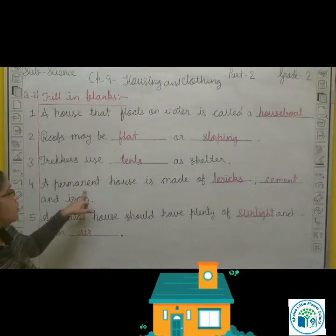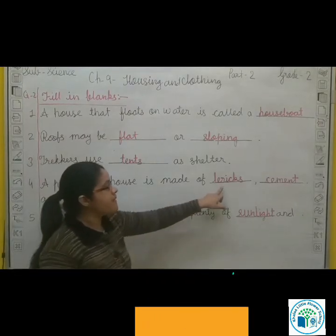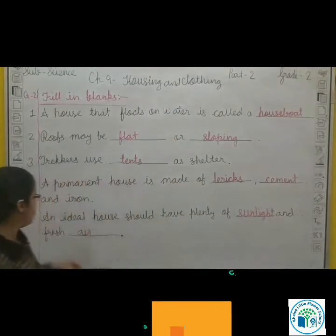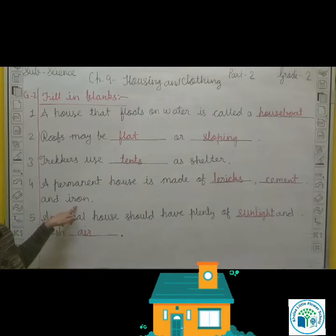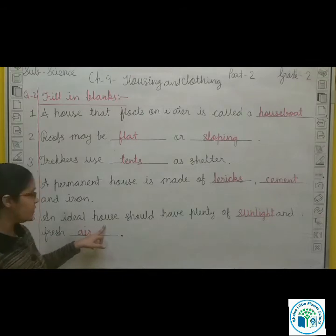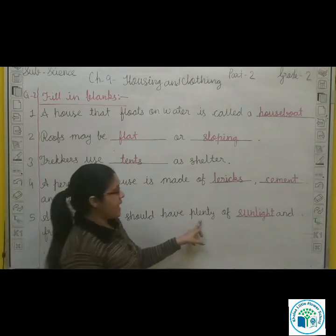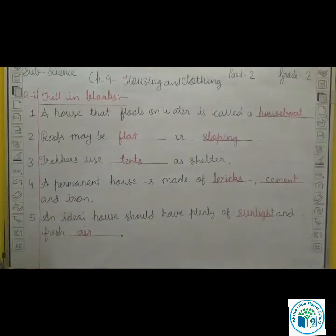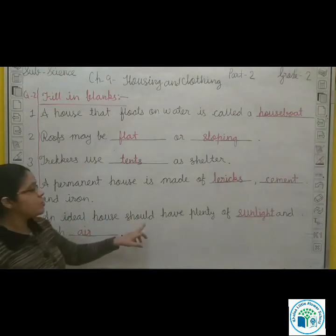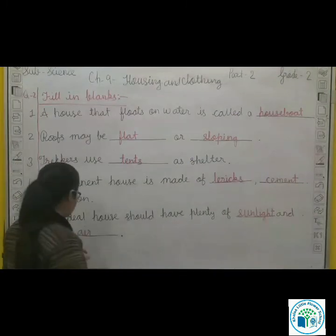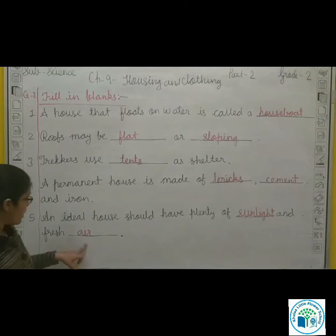Permanent house means pakka house. Permanent house is made of bricks, B-R-I-C-K-S, cement, C-E-M-E-N-T, and iron. An ideal house should have plenty of sunlight and fresh air. That is what we call an ideal house with all facilities.